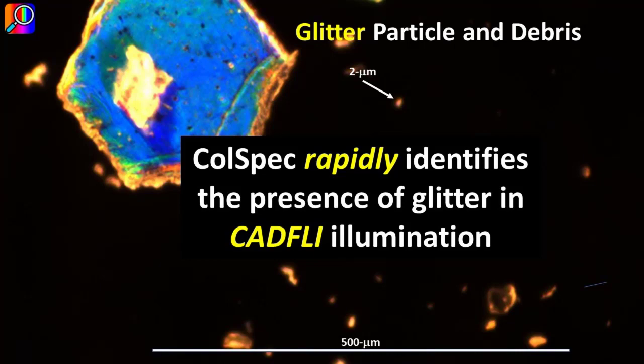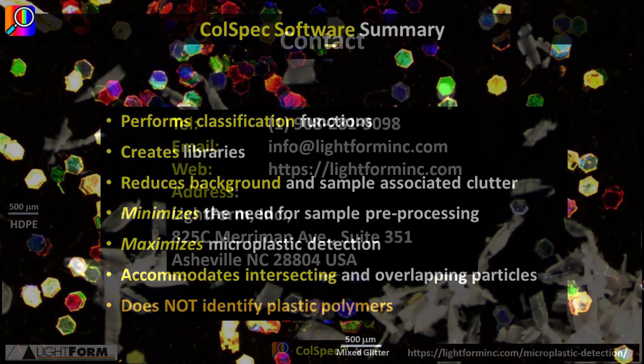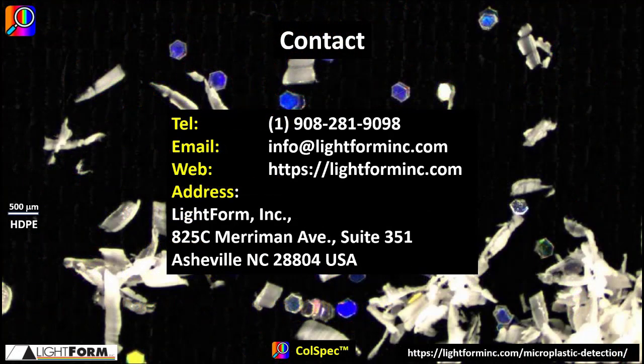In summary, Kohlspec performs classification functions, creates libraries, reduces background and sample-associated clutter, minimizes the need for sample pre-processing, maximizes microplastic detection, and accommodates intersecting and overlapping particles, but does not identify plastic polymers. Thank you for watching. Please do not hesitate to contact Lightform if you have questions.